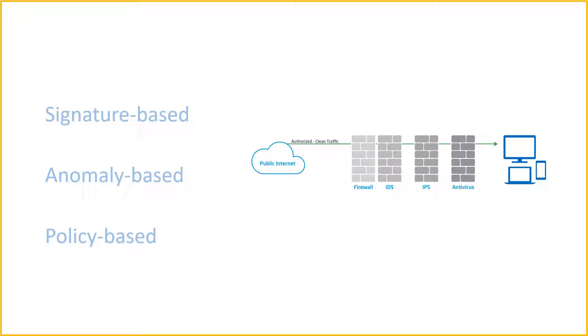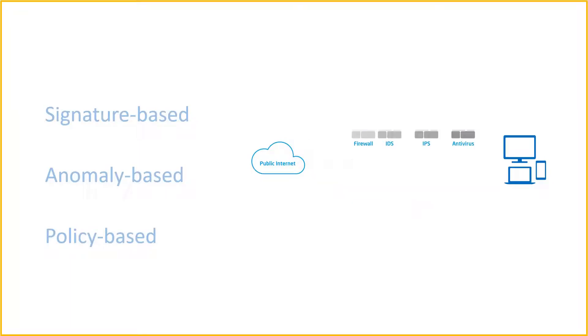Once the IPS detects malicious activity, it can take many automated actions including alerting the administrator, dropping the packet, blocking traffic from the source address, or resetting the connection.